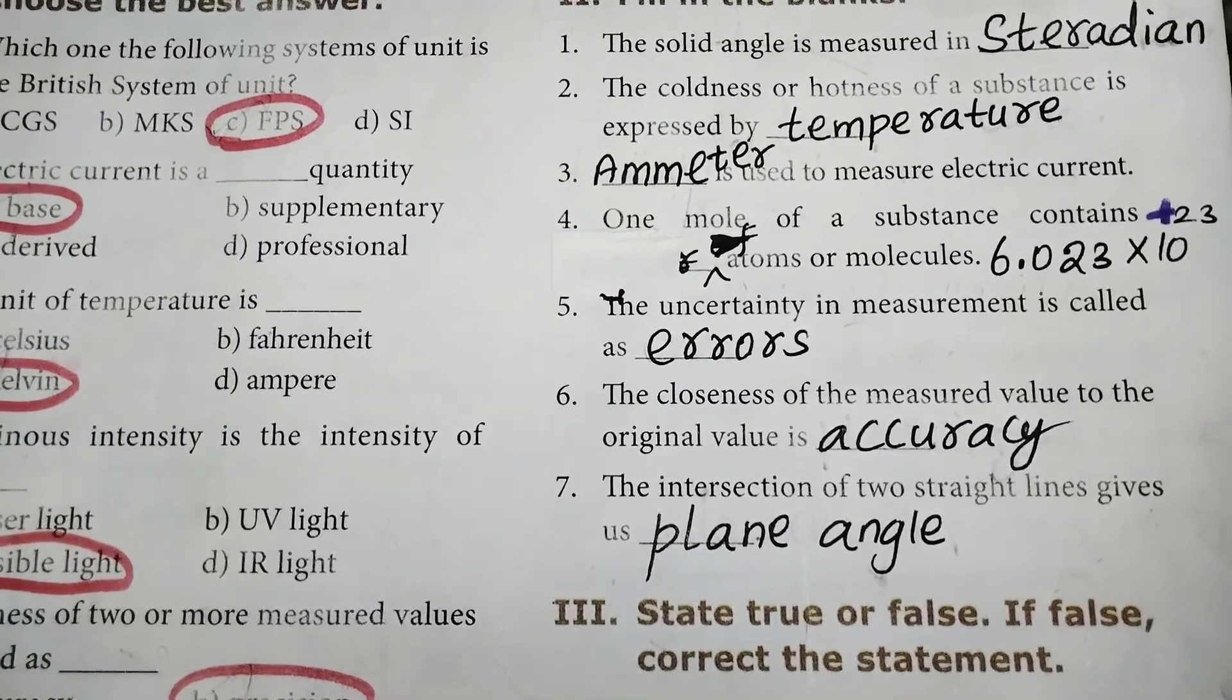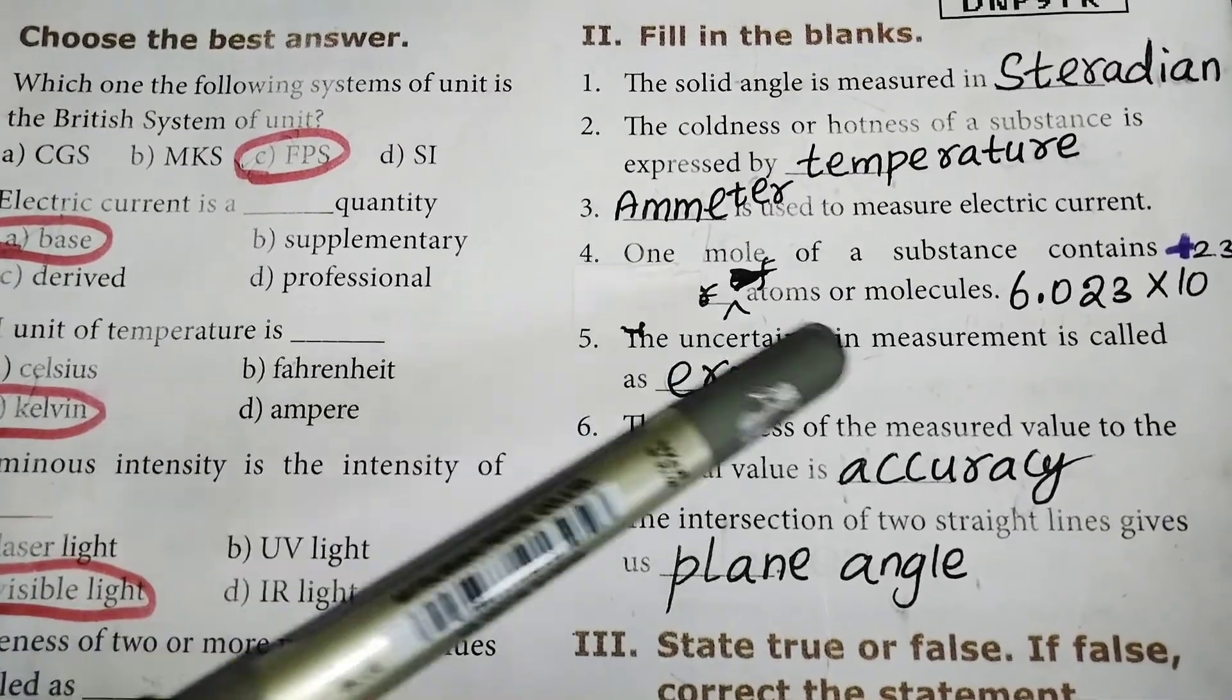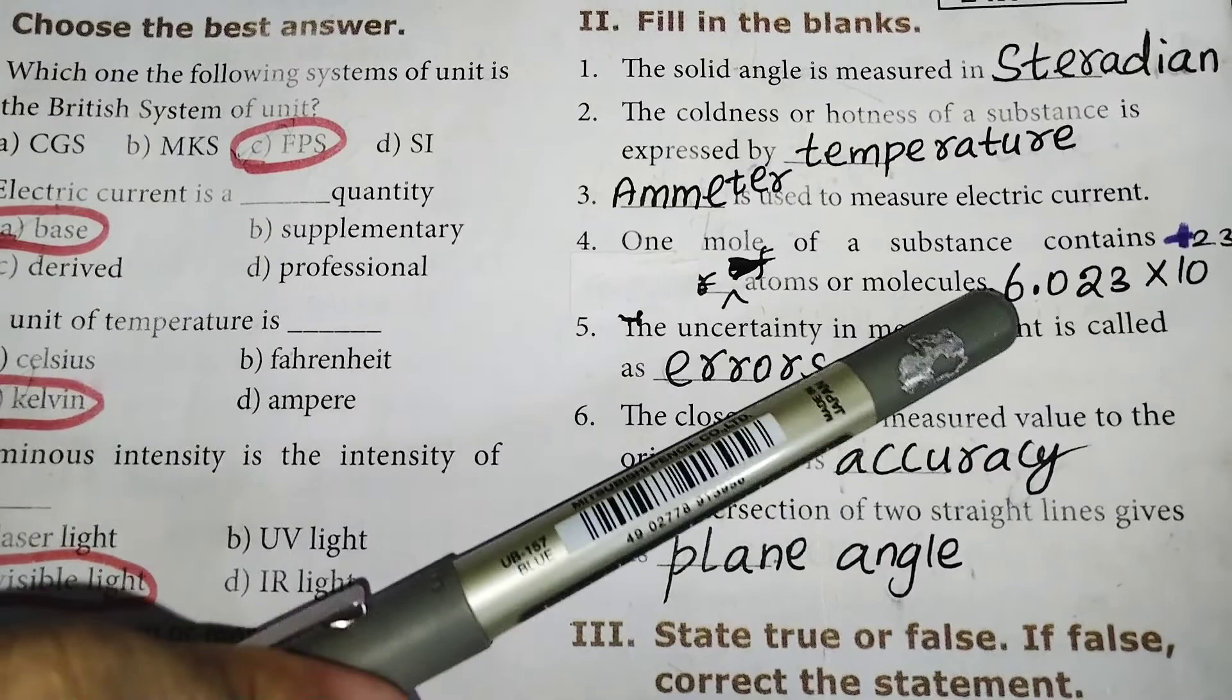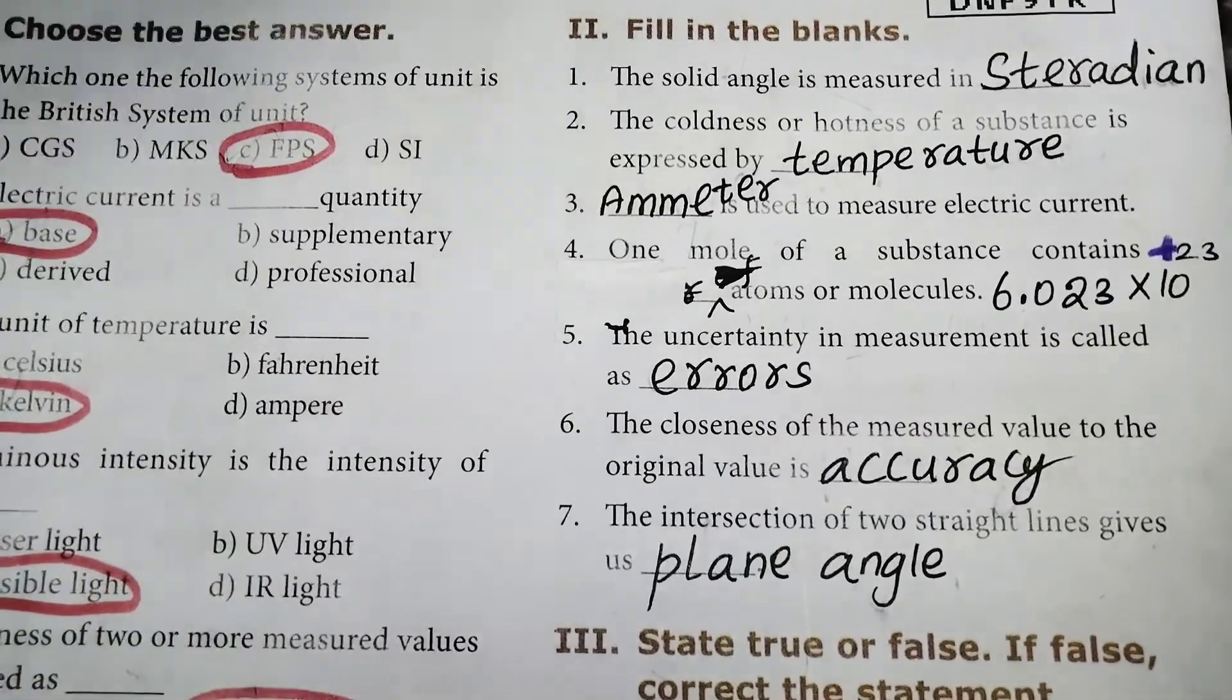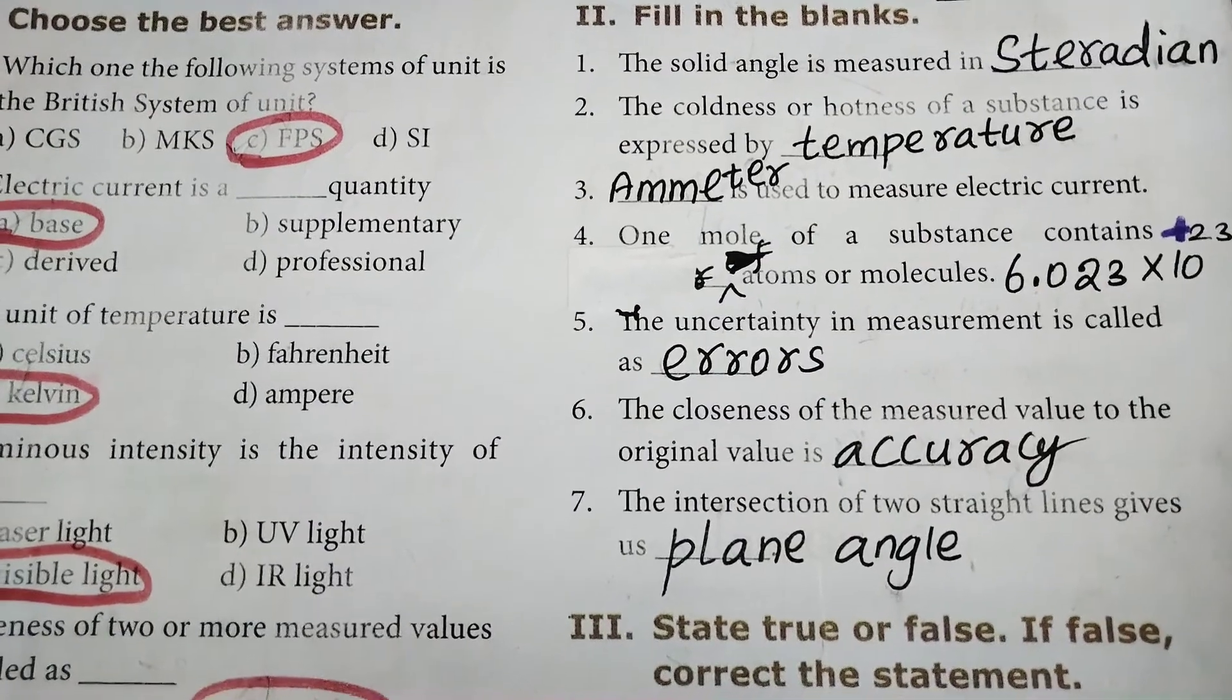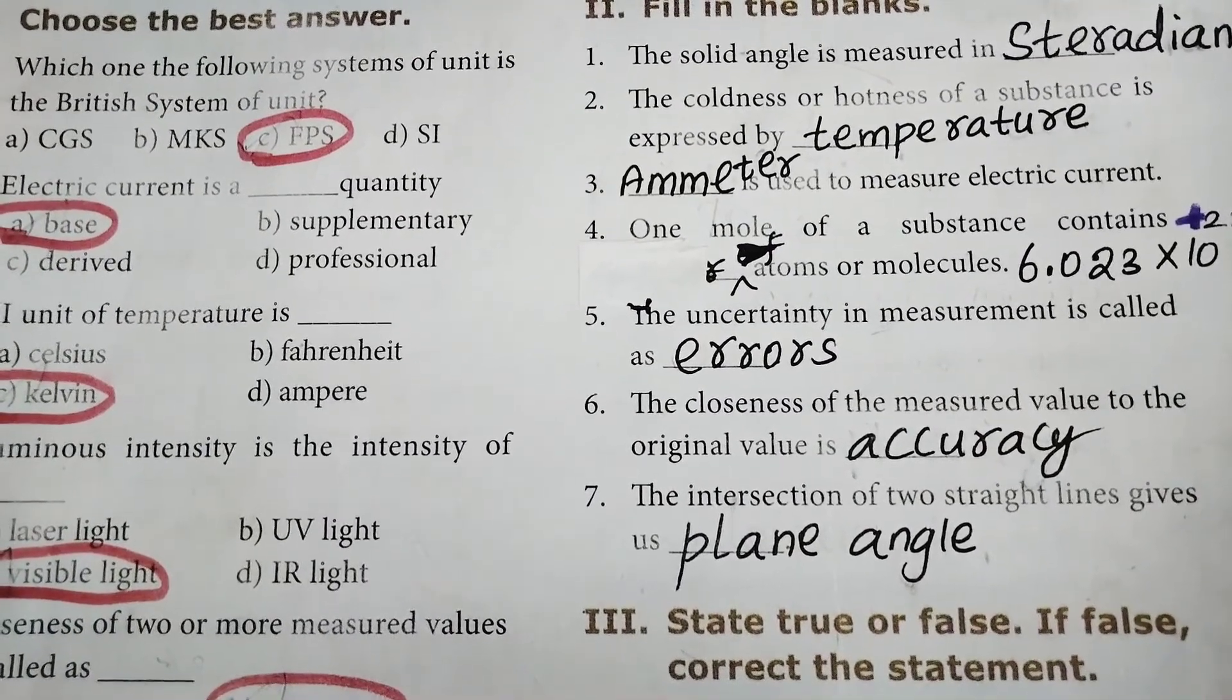Fourth one, one mole of a substance contains dash atoms or molecules. Answer, 6.023 into 10 power plus 23. Fifth one, the uncertainty in measurement is called as errors.